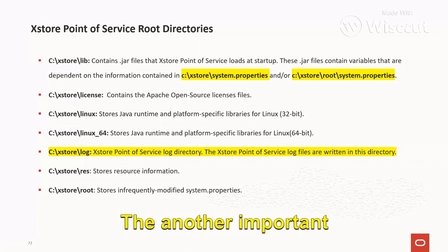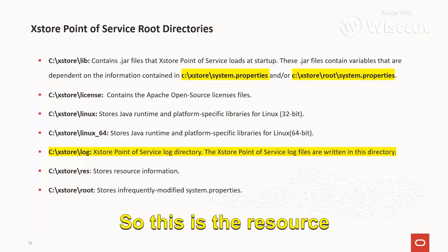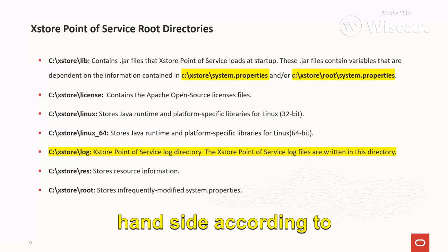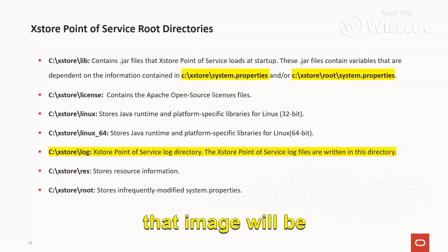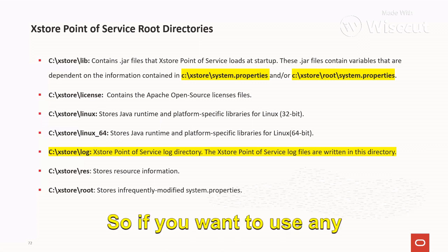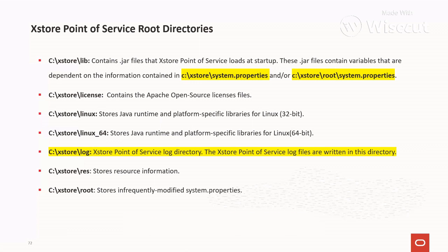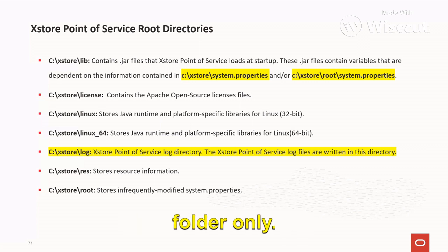Another important directory is C:\AccessStore\res (resource). Suppose you are looking at an image displayed on the left or right side according to configuration — that image will be available inside this directory only. If you want to see any application help HTML files, all the HTML files will be available in the C:\AccessStore\resource folder only.